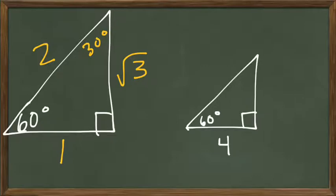And I need to find all the other sides and the angles. Well, of course I know the missing angle is 30, so this is a 30-60-90 triangle.